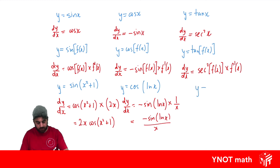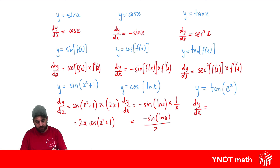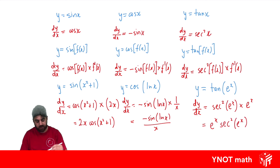What about y equals tan of e to the x? The derivative is: the derivative of tan is sec squared, so we get sec squared of our function, multiplied by the derivative of our function. The derivative of e to the x is e to the x. We can tidy this up by writing it as e to the x times sec squared of e to the x.